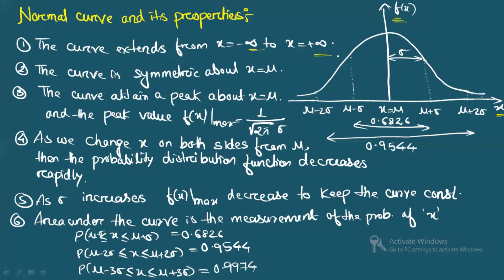The second property is that the curve is symmetric about x = μ — the probability density function is symmetric about the mean. The third property is that the curve attains a peak at x = μ. The normal curve is unimodal, meaning it has only one peak.